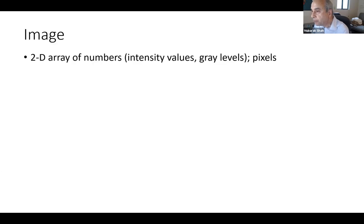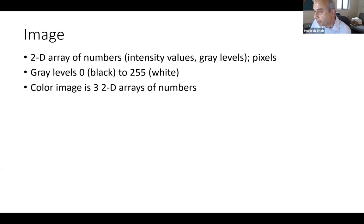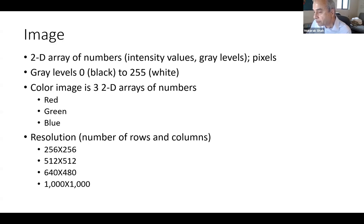An image is a 2D area of numbers — a matrix where each number corresponds to the intensity value or gray level. Each element in the image is called a pixel or picture element. Gray levels range from zero (black) to 255 (white). Color images have three two-dimensional areas — red, green, and blue. Resolution can vary from 256×256 all the way to 1000×1000 or more — like a megapixel picture.